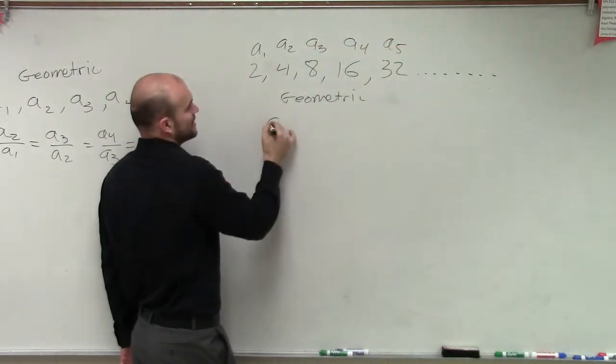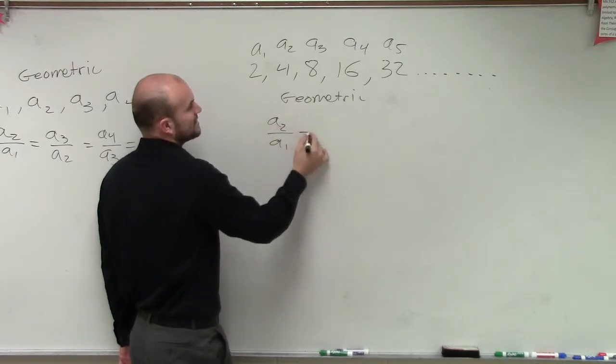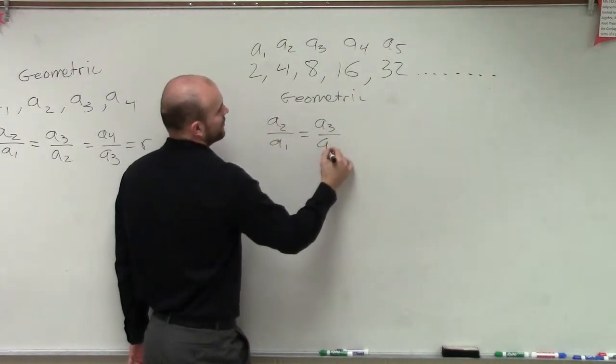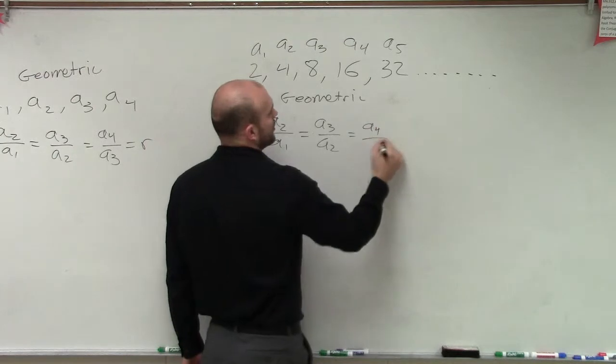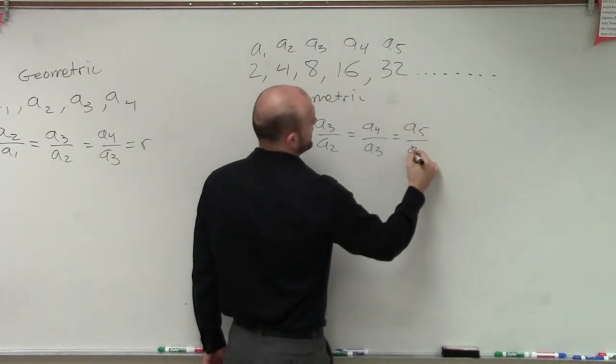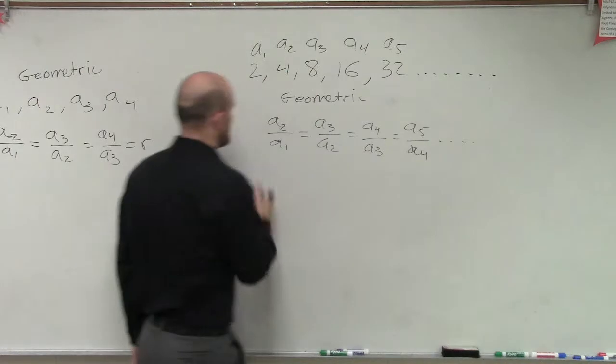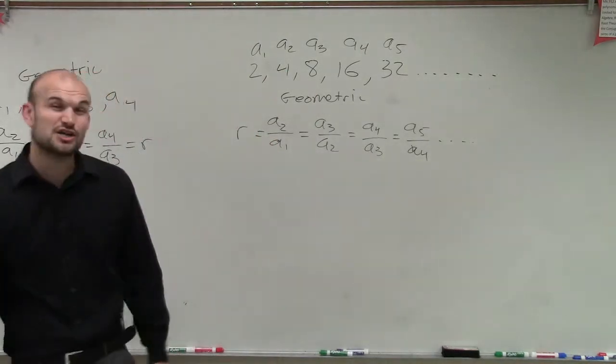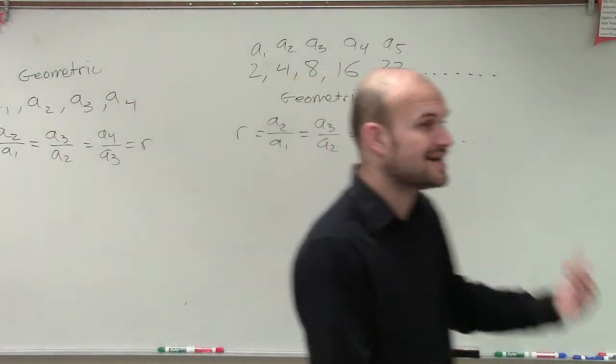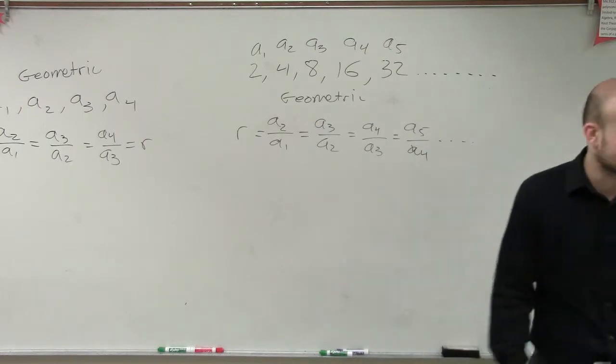Remember, it's geometric if the ratio of asa 2 over asa 1 is equal to asa 3 over asa 2, which is equal to asa 4 over asa 3, which is equal to asa 5 over asa 4, and that all equals a ratio. So as long as you have a constant ratio between your consecutive terms, we have a geometric sequence.